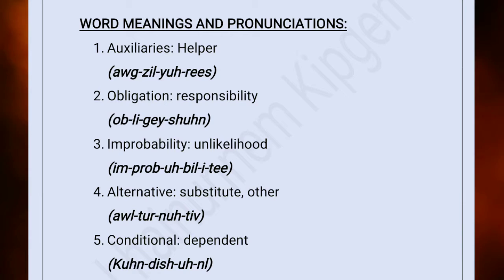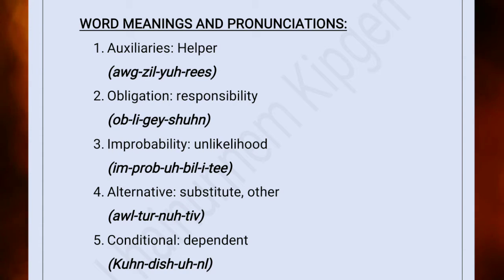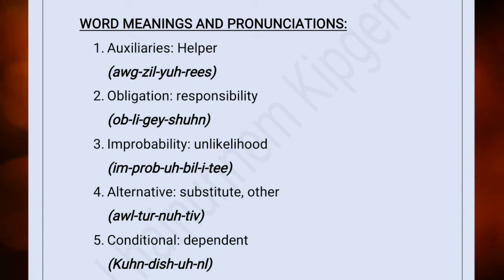The first word we have here is 'auxiliaries' — pronounce it as auxiliaries — and its meaning is 'helper.' The next word is 'obligation,' meaning 'responsibility.' The third word is 'improbability,' meaning 'unlikelihood.'